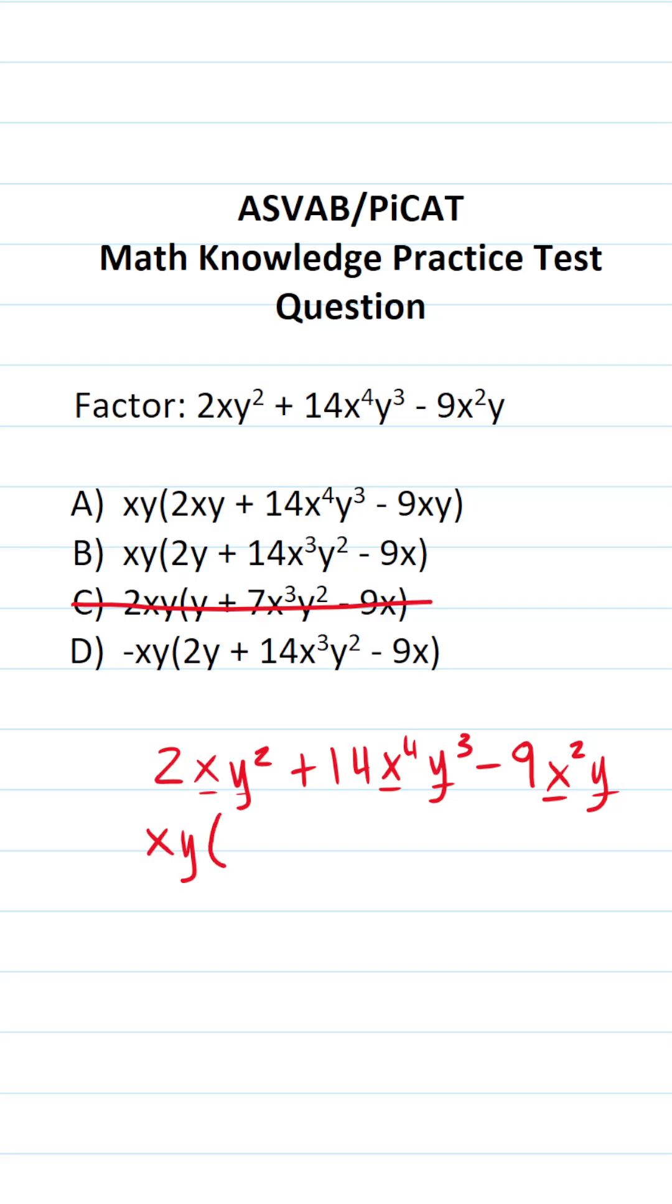All right, what do we have to multiply xy by to get 2xy squared? Well, that's going to be 2y. What do we have to multiply xy by to get 14x to the fourth y to the third? That's going to be 14x to the third y squared. And what do we have to multiply xy by to get negative 9x squared y? That's going to be negative 9x.